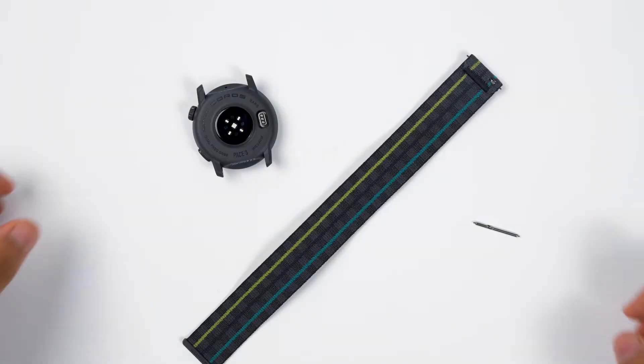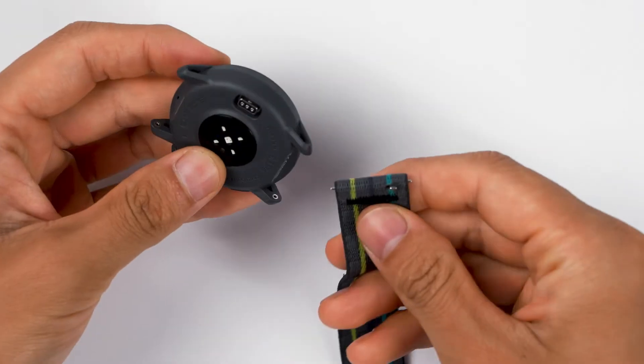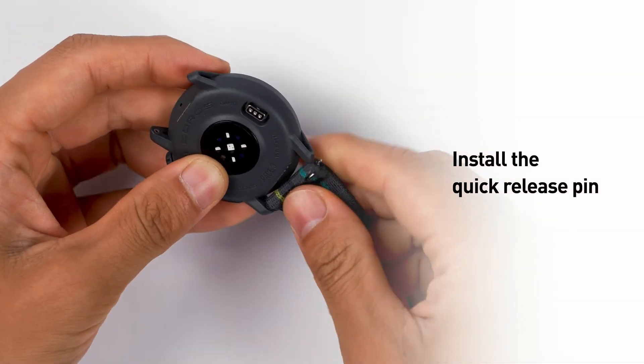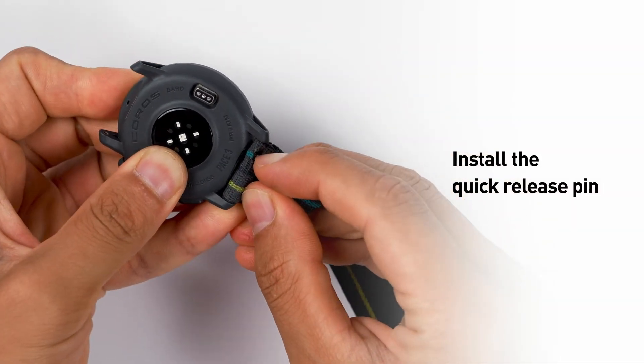To install a nylon band, attach the quick-release pin by sliding one end into the bottom lug. Slide the pin with your fingernail until the pin snaps into place.